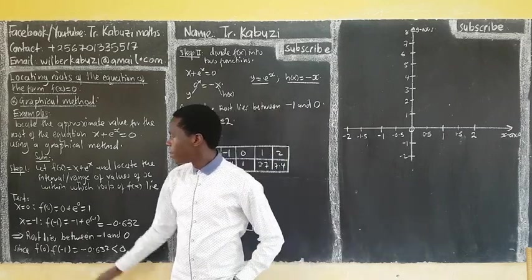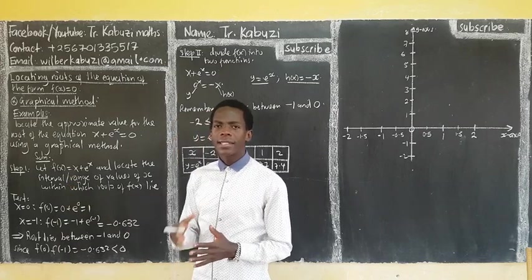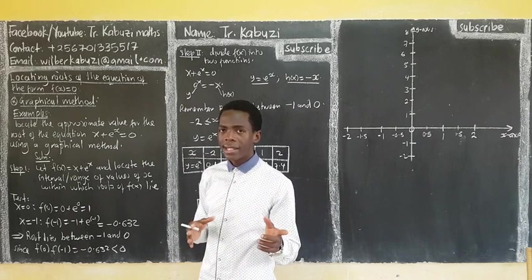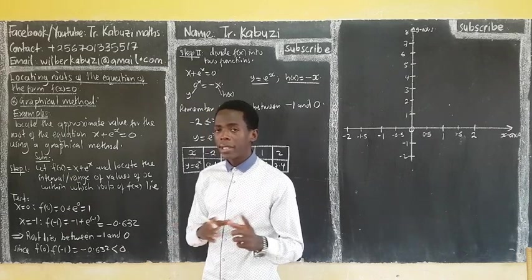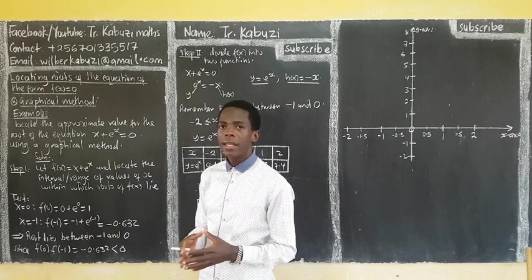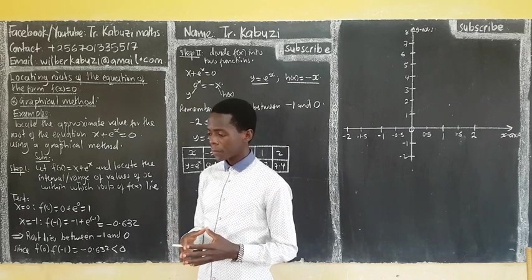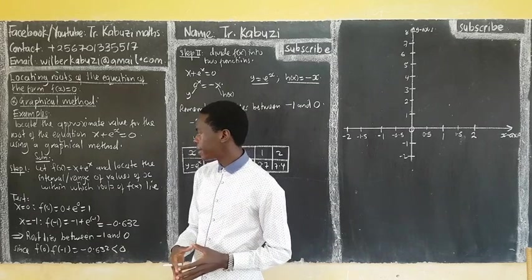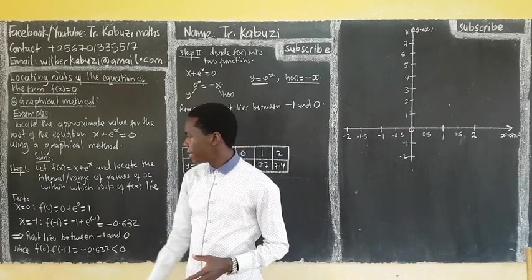Now, what I am doing here, when I look at the values, there is no fixed method. But you just look at the values and say, I can test this. It gives me a positive. When I put in this, it will give me negative. I am just testing. Or you use the other method when you have to test using this change of sign of f(x).